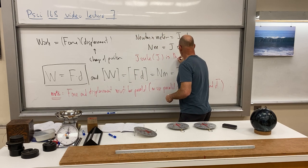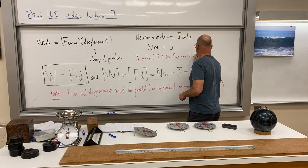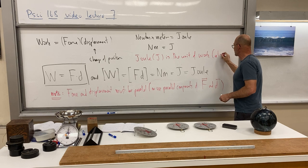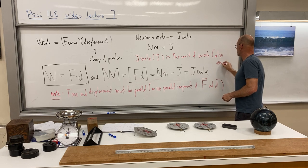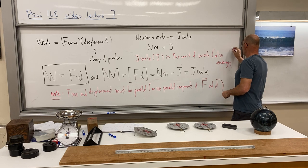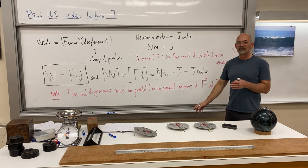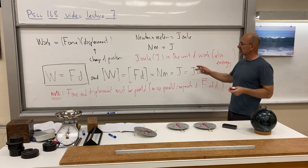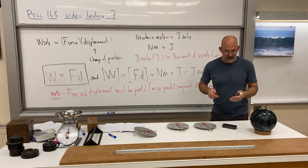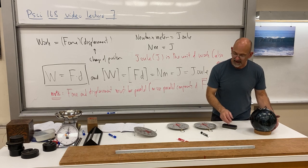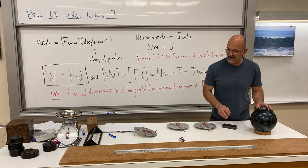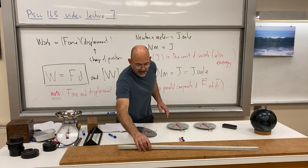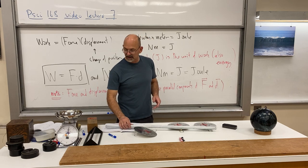The joule, J, is the unit of work and also of energy. We need to do a little bit more to give a more formal definition of energy, but we're already there. Work and energy are very closely related — the same in some sense.